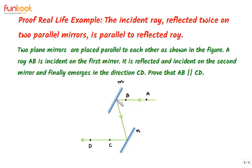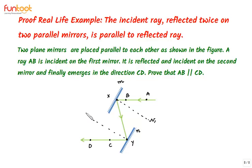We can mark the point where the incident ray strikes mirror M as X, and the point where the reflected ray strikes mirror N as point Y. At point X we can draw a normal N1, and at point Y we can draw a normal N2. Normals are lines that are perpendicular to the surface at a particular point. So N1 is perpendicular to mirror M at point X, and N2 is perpendicular to mirror N at point Y.